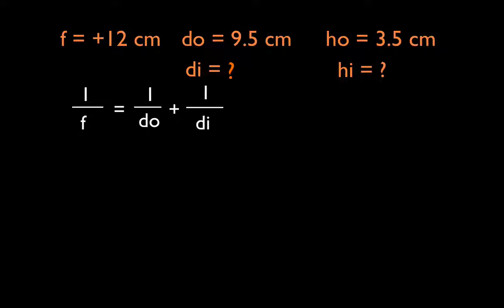This is the information. Here's the thin lens equation. I want to solve for Di. This is 1 over F, 12, 1 over Do, 9.5. Then we want to solve for the Di. So I'm going to subtract 1 over Do from both sides. If I do that, I get that 1 over Di is equal to 1 over F minus 1 over Do.